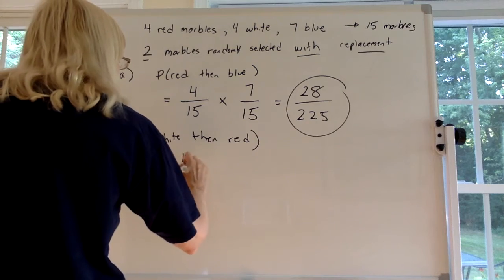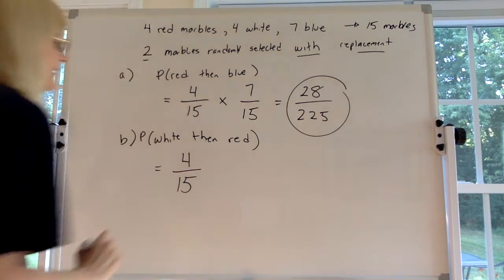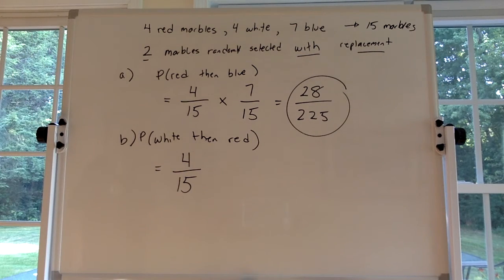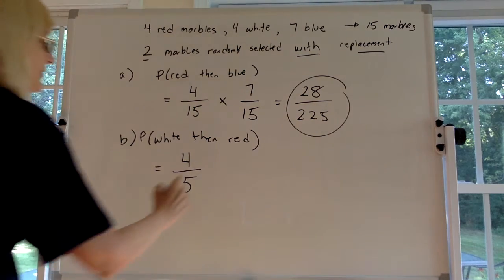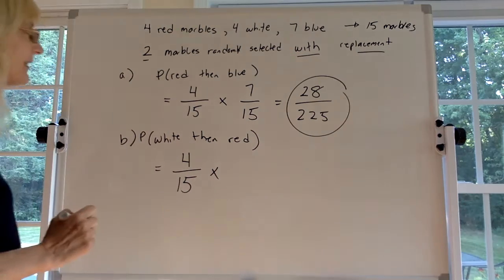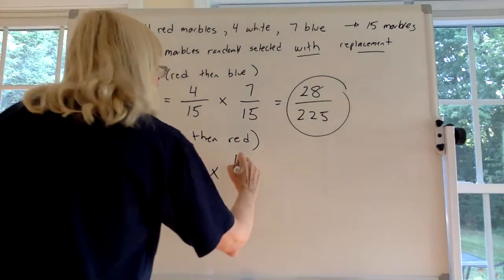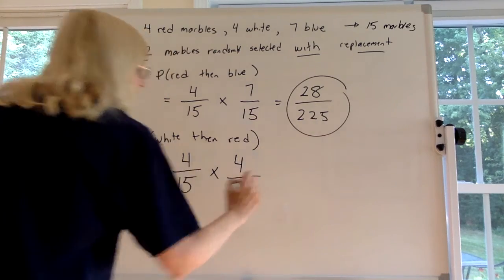A white is 4 out of 15 in that bag. Okay, put that white back. Then you gotta multiply it by the probably getting a red. There's 4 reds out of the 15 in the bag.